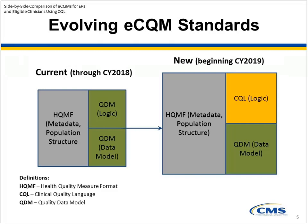This illustration presents the evolution of current standards for creating electronic specifications for eCQMs. On the left, HQMF provides the basic electronic specification for the measure. The Quality Data Model, QDM, provides information to help finalize the HQMF and is divided into two parts: the data model and the logic. That is the current standard through calendar year 2018. Moving to CQL, HQMF will continue to provide the metadata and population structure, QDM will still provide the data model, but CQL will represent the logic, depicted on the right, beginning calendar year 2019.